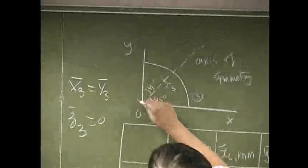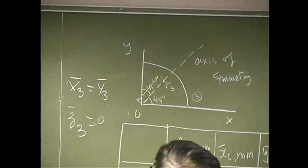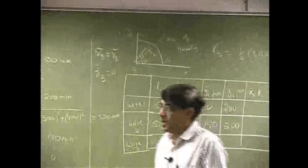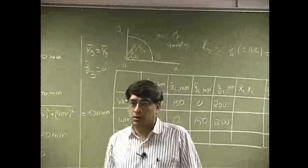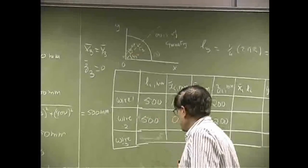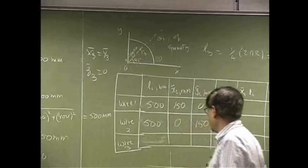Now we need to find how far the centroid is from the origin. To find that length, you have to go back to the back of the book and look at the diagram for a circular arc.